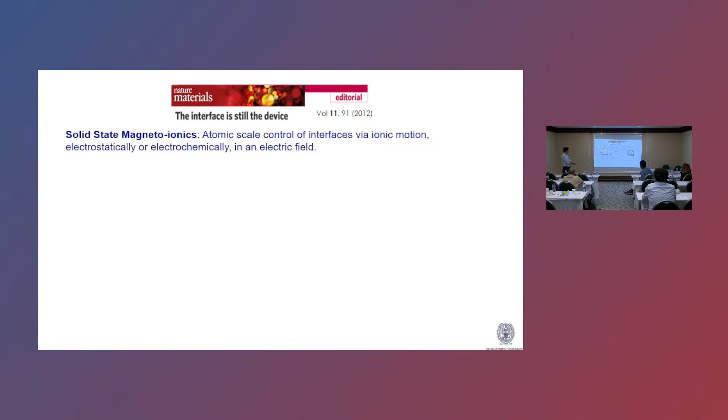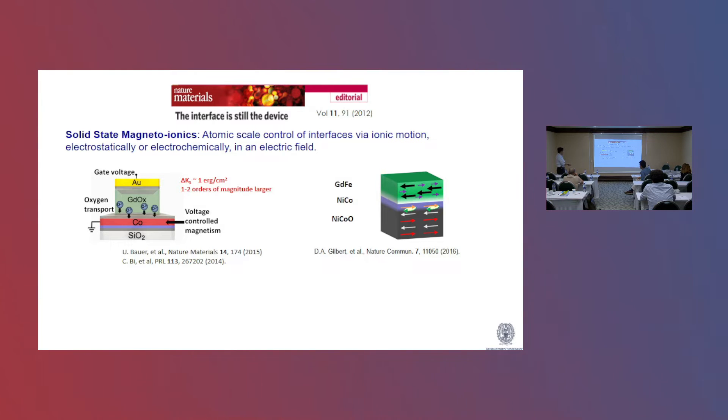For example, in this seminal work from Jeff Beecher's group and also Wigan Wong's group, that they show the perpendicular anisotropy at this cobalt-gallinium oxide interface can be toggled. And this is consistent with prior studies that shows the oxygen content right at this interface. The cobalt-oxygen bond plays a very important role to PMA. And the effect size actually can be very large, which is very useful.